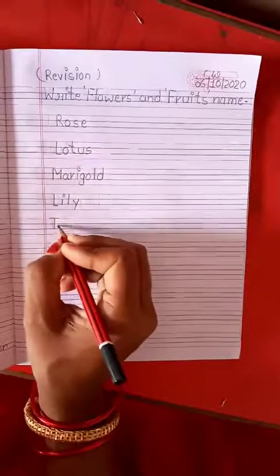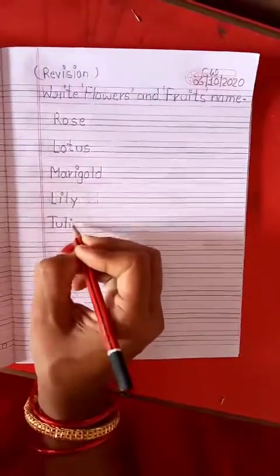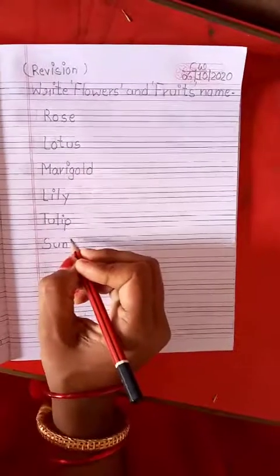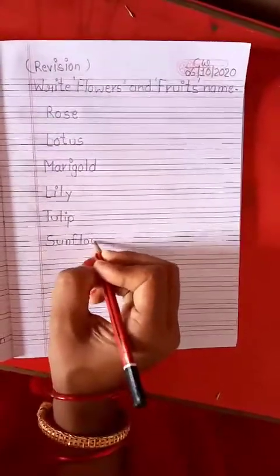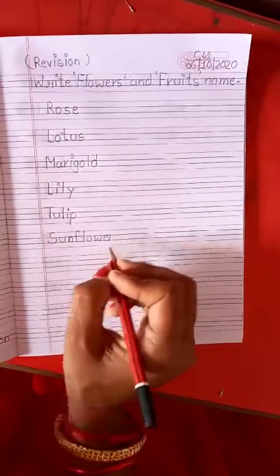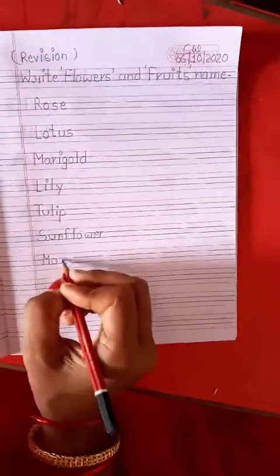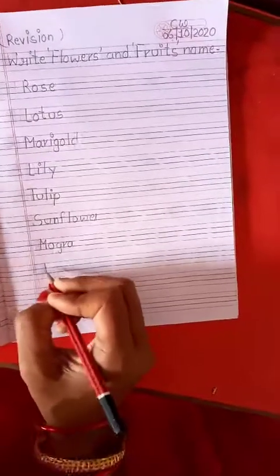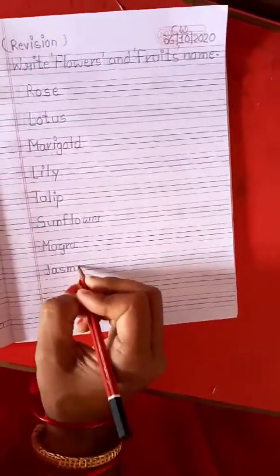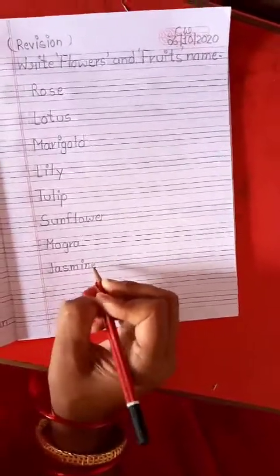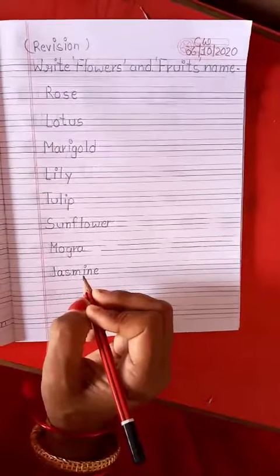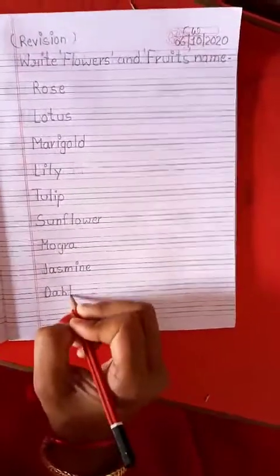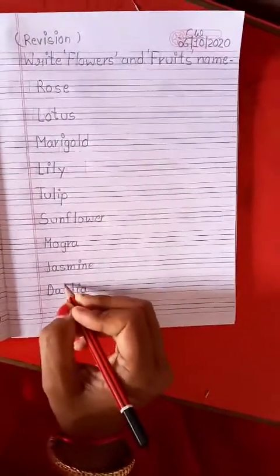Lily. T, U, L, I, P. Tulip. S, U, N, F, L, O, W, E, R. Sunflower. M, O, G, R, A. Mogra. J, A, S, M, I, N, E. Jasmine. D, A, H, L, I, A. Dahlia.